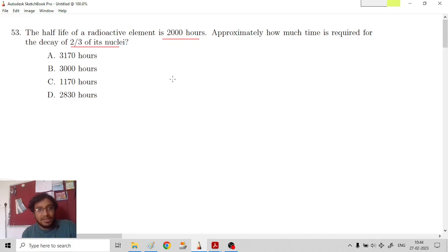They have given us the half-life. T half is 2000 hours. And we will need the decay constant lambda. Decay constant lambda is ln 2 upon half-life. So this will be per hour.